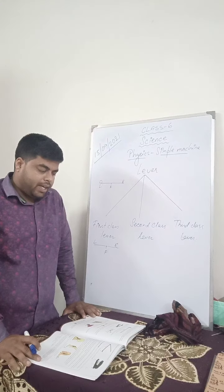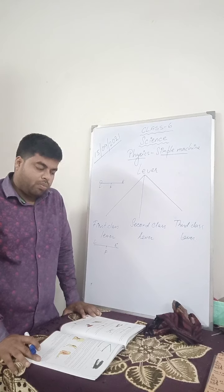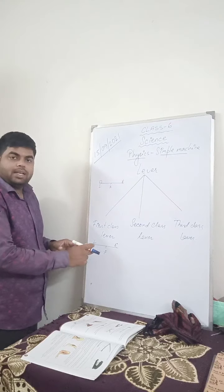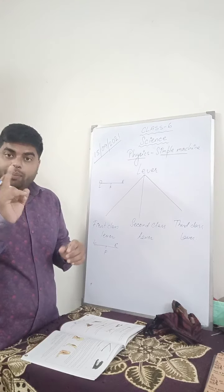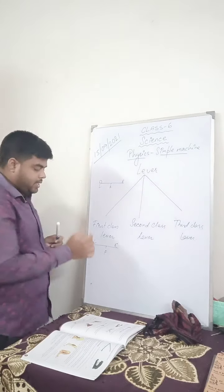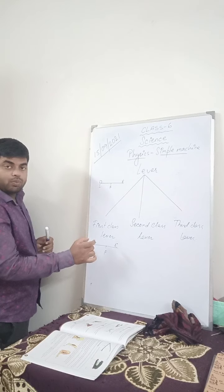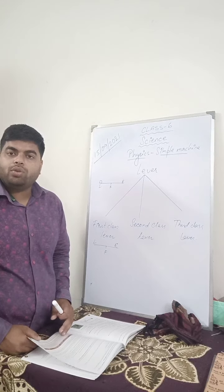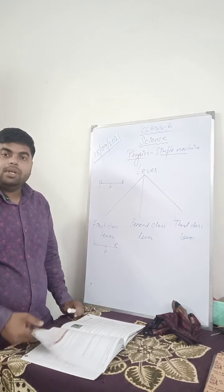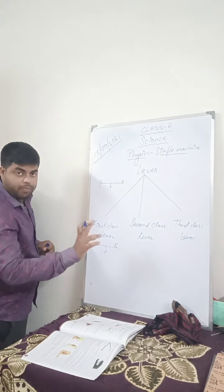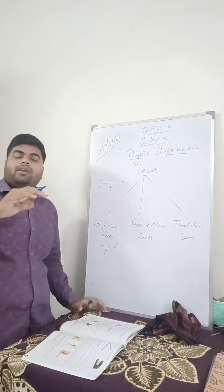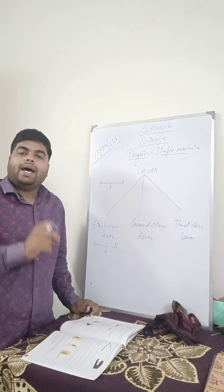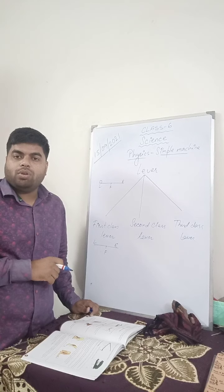In a first class lever, the mechanical advantage can be less than 1, equal to 1, or more than 1, depending on the position of the fulcrum between the load and the effort. The mechanical advantage depends on the distance between the load and the effort arm. If the effort arm is greater than the load arm, mechanical advantage will be more than one. If the load arm is greater than the effort arm, mechanical advantage will be less than 1. And if the load arm equals the effort arm, mechanical advantage will be exactly one.